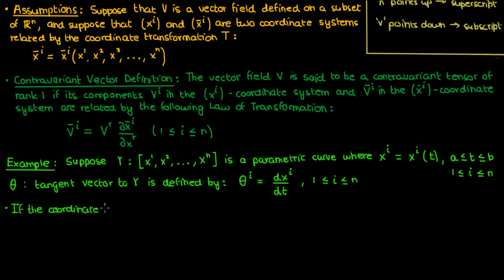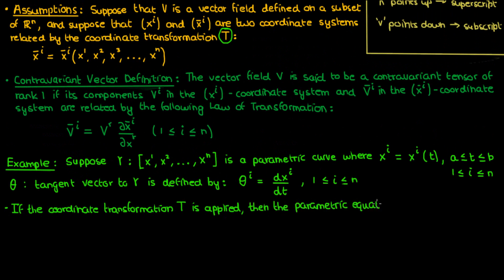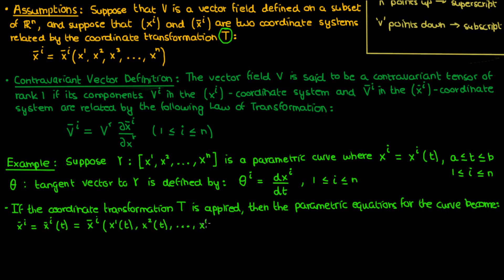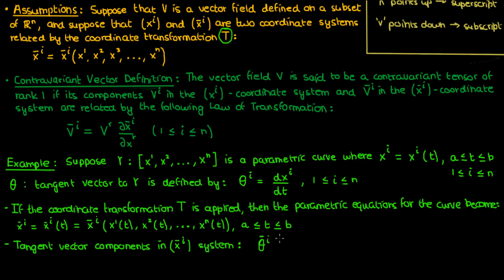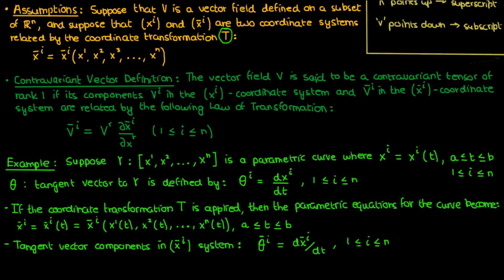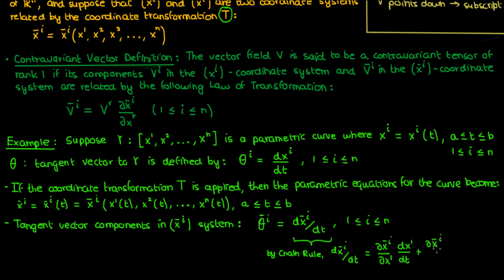Now what if we change the coordinates from xi to xi bar using this coordinate transformation t? Well in that case, the parametric equations describing our curve now become equations for xi bar, which are also functions of time, but in terms of the original coordinate system, the xi bars are functions of each of the individual coordinates, which themselves are functions of time. The components of the tangent vector for the curve in this transformed coordinate system are now theta super i bar equals the derivative of xi bar with respect to t. But using the chain rule of differentiation, the derivative of xi bar with respect to t can be written as the partial derivative of xi bar with respect to x1 times the derivative of x1 with respect to t, plus the partial of xi bar with respect to x2 times the derivative of x2 with respect to t, and so on.